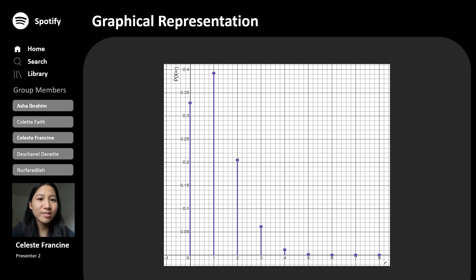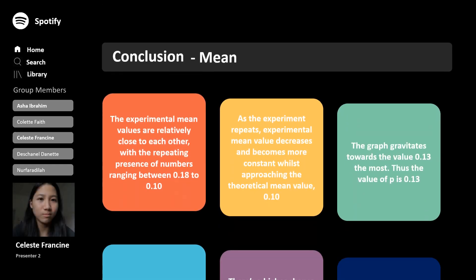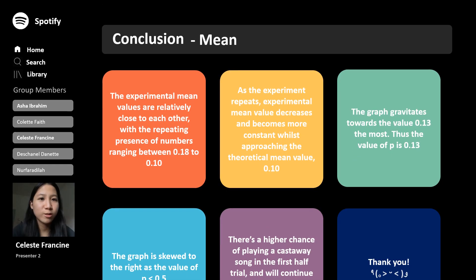Thus, this is the graph for the probability of getting a castaway song. To conclude, we can say that the experimental values are relatively close to each other, with the repeating presence of numbers ranging between 0.1 to 0.18.